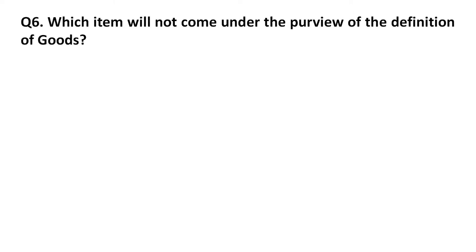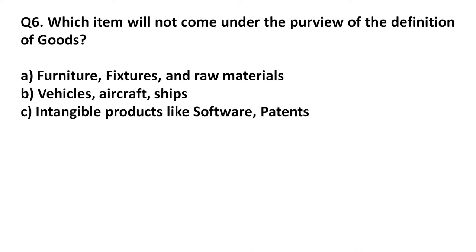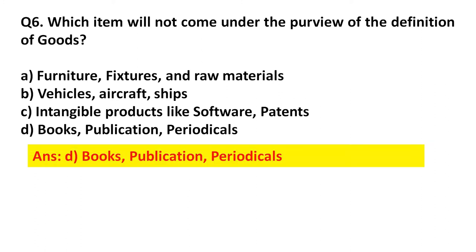Question 6: Which item will not come under the purview of the definition of goods? Option A: Furniture, fixtures, and raw materials. Option B: Vehicles, aircraft, ships. Option C: Intangible products like software, patent. Option D: Books, publications, periodicals. Answer: Option D, books, publications, periodicals.